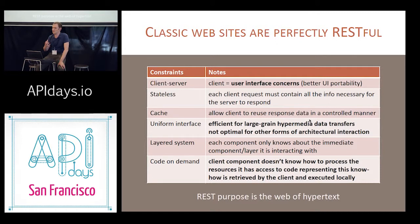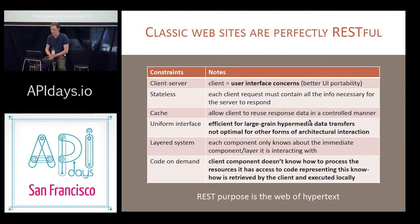Classic websites are the perfect application of REST. REST was designed to really make the web scale as a fully distributed hypermedia application. REST comes with six main constraints. If you read Roy Fielding's dissertation again, he is talking all the time about hypermedia and user interface — it's really something that is core to REST.